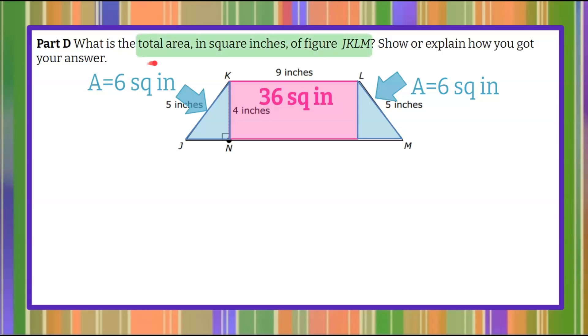Welcome back. So the total area in square inches of this entire figure, JKLM, is the whole trapezoid that's pictured here. So we're going to take the area of each part of this, the triangle, add the rectangle, add the triangle.